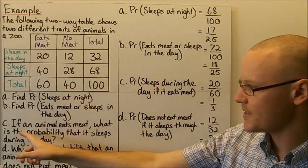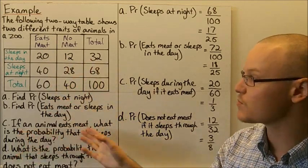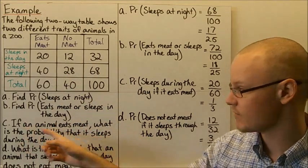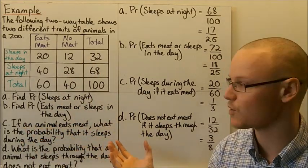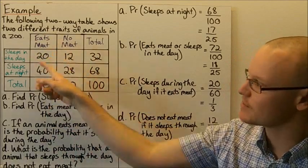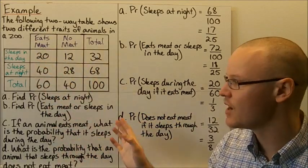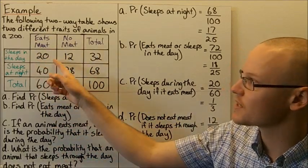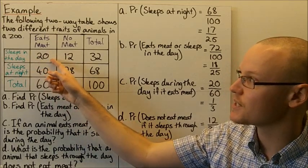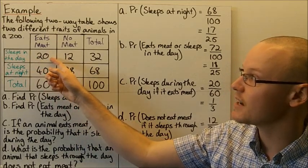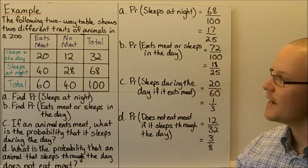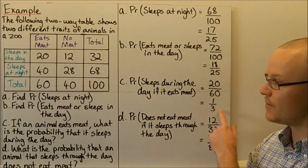The reason we restrict to 60 is because the question asks us specifically about animals that eat meat. Of those, the ones that sleep during the day are 20 out of the total of 60. So 20 out of 60 is one-third.